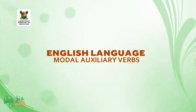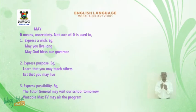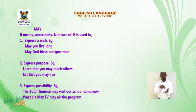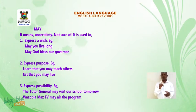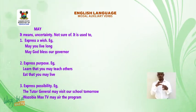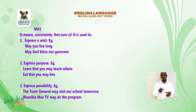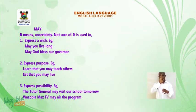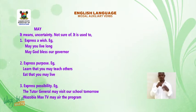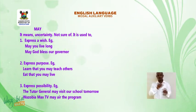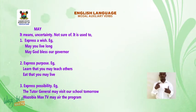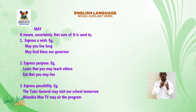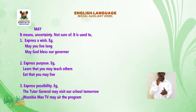Welcome to the second part of today's lesson. Now let's continue our class with MAY (M-A-Y). It means uncertainty — not sure of. It is used to: one, express a wish — for example, may you live long; may God bless our governor. Two, to express purpose — for example, learn that you may teach others; eat that you may live. Three, to express possibility — for example, the tutor general may visit our school tomorrow; Wazobia Max TV may air the program.